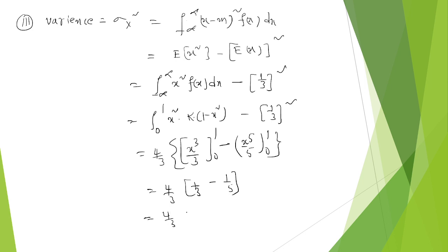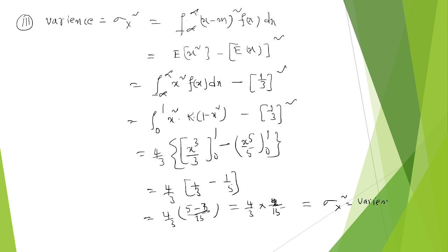So that equals 4 by 3 multiplied with (5 minus 3) by 15, which is 4 by 3 multiplied with 2 by 15. This gives 8 by 45, minus 1 by 9. After simplification, variance equals 2 by 15. So this is the variance, also named sigma x squared or the second mean.